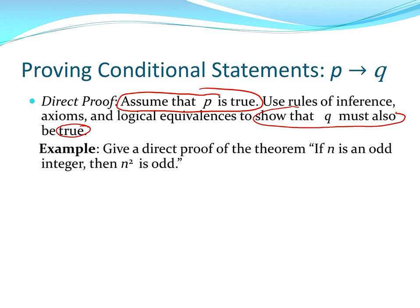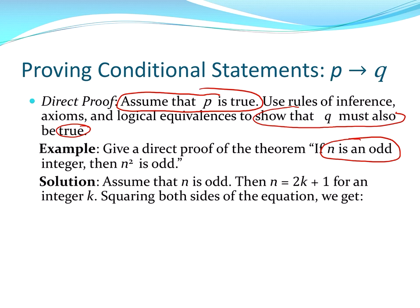Here's an example. It's an implication. If n is an odd integer, then n squared is odd. Well, in order to prove that, we're going to assume that n is odd. That's our hypothesis. So there it is. Assume that n is odd. And now we're going to apply the definition. Then by the definition of odd, n is equal to 2k plus 1 for some integer k.